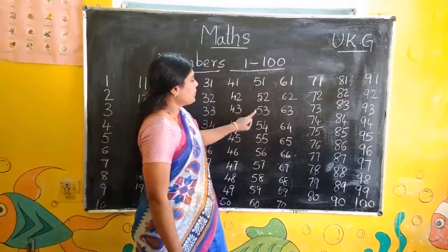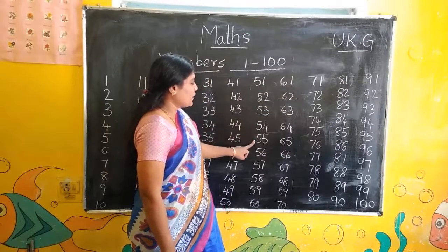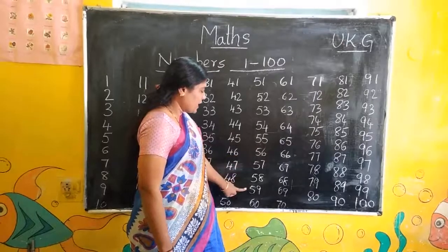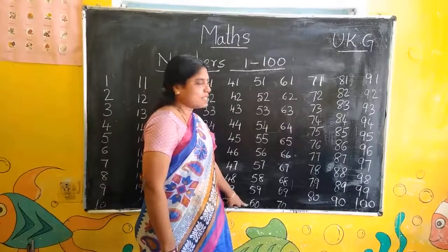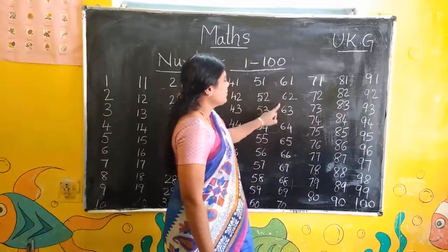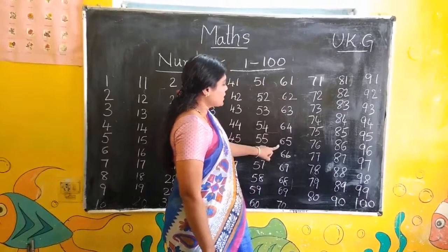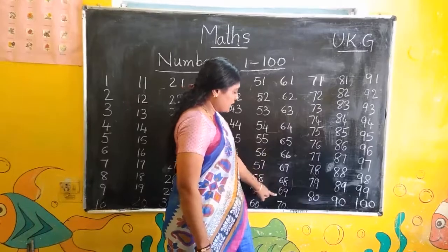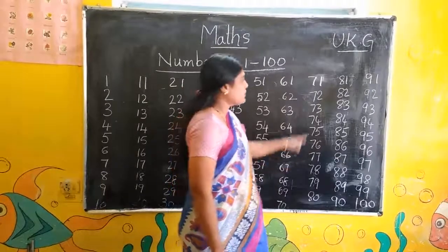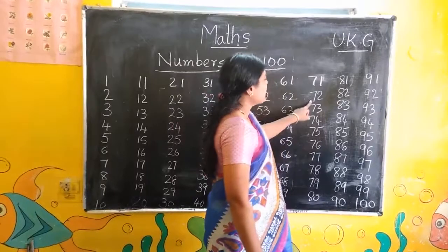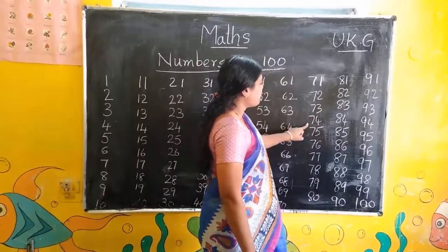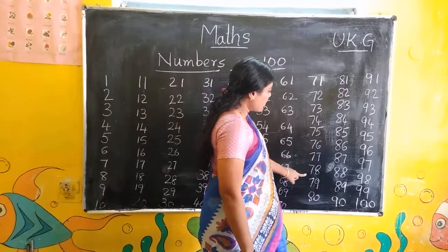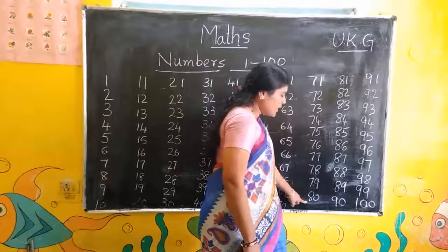51, 52, 53, 54, 55, 56, 57, 58, 59, 60, 61, 62, 63, 64, 65, 66, 67, 68, 69, 70, 71, 72, 73, 74, 75, 76, 77, 78, 79, 80.